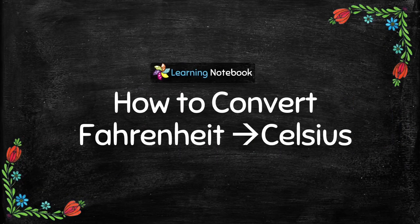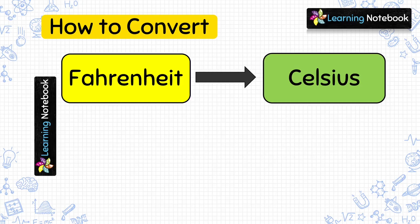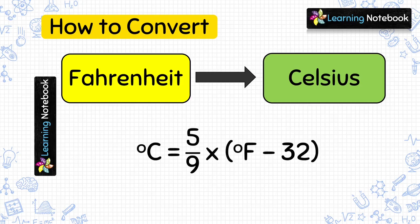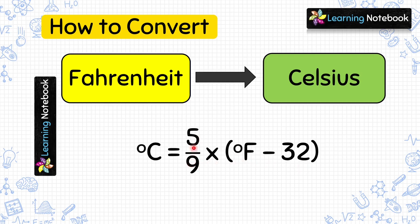Let's start and first understand how to convert temperature given in Fahrenheit into Celsius. The formula to convert temperature given in Fahrenheit to Celsius is 5/9 multiplied by (Fahrenheit minus 32). This formula has two parts: first we do subtraction, and then multiply the result with 5/9.